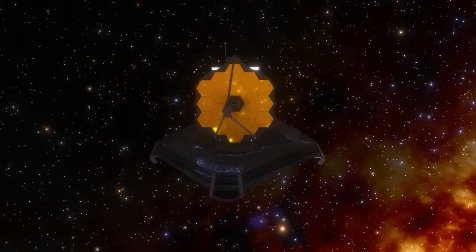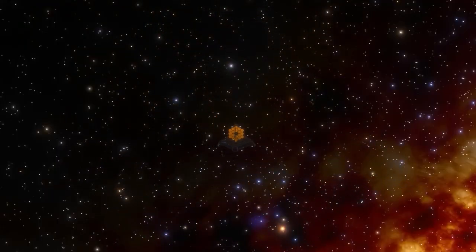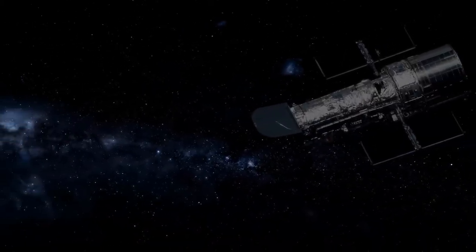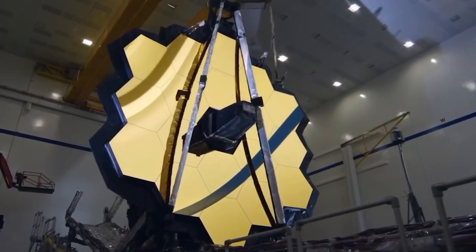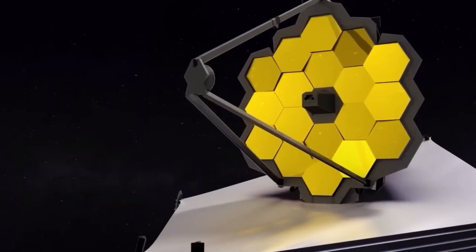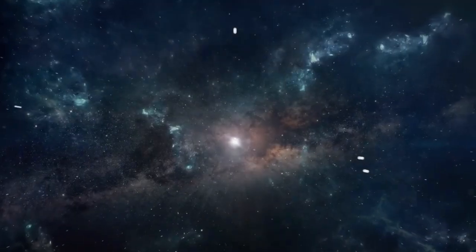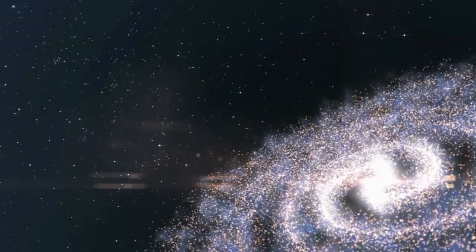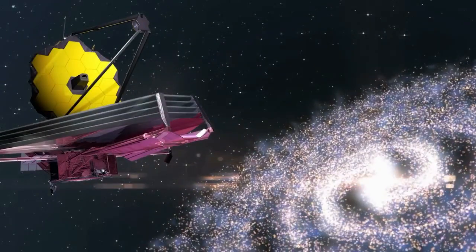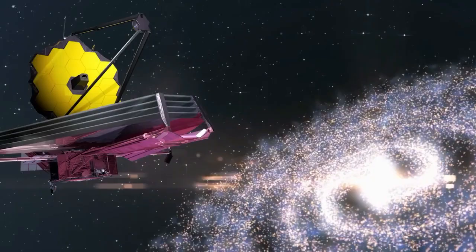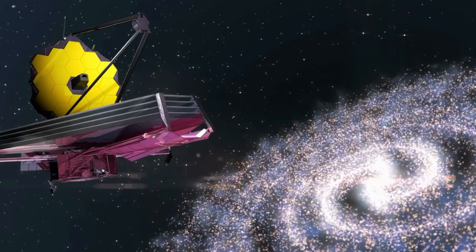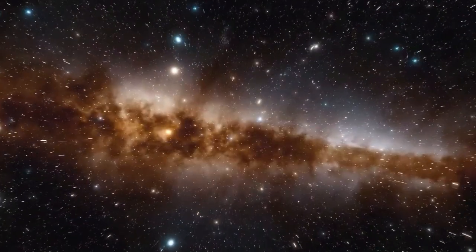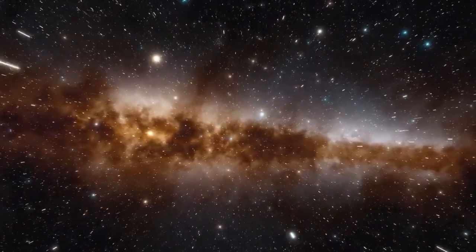Interpreting data from gravitationally lensed objects presents considerable challenges. The lensing effect distorts images, creating multiple stretched versions of the same background object. Astronomers must develop complex models to untangle these distortions and determine the true properties of what they're seeing. Through this cosmic magnification, JWST discovered the five protoglobular clusters within the Cosmic Gems Arc. Without gravitational lensing, these clusters would have remained invisible, simply too distant and too faint for direct observation.